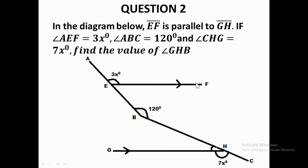For the second question, you also have this parallel line and another parallel line. We need to find angle GHB, which is this small angle here. There is no line of transversal yet in this question either, because line AB is not straight — it is bent here. What you can do is complete this straight line AB so that it touches this parallel line, and then it becomes a line of transversal.